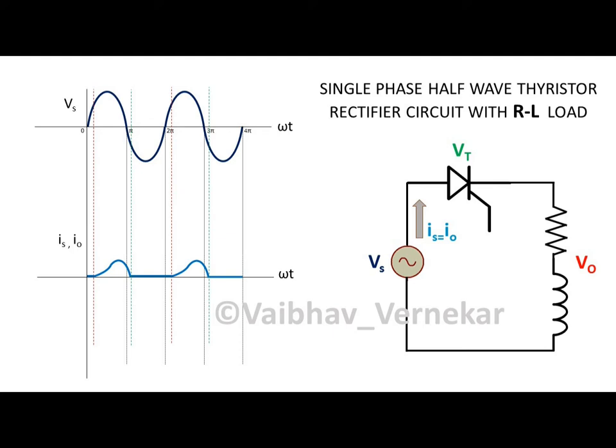Observe the graph for current as it follows voltage Vs till the end of the positive half cycle. The current does not decay to zero at omega t equals pi, but at some angle beta ahead of omega t equals pi. This is due to the inductor delaying the decay of current.